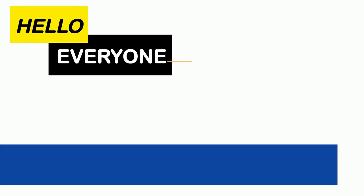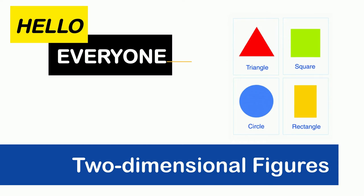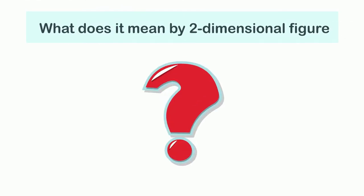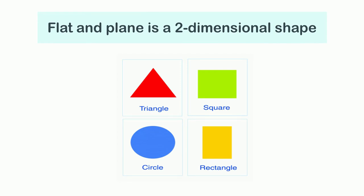Hello everyone, our today's topic is two-dimensional figures. We will be learning about what two-dimensional means and what some common two-dimensional figures are. Any figure that is flat and plain is a two-dimensional shape. It does not have any thickness or depth.